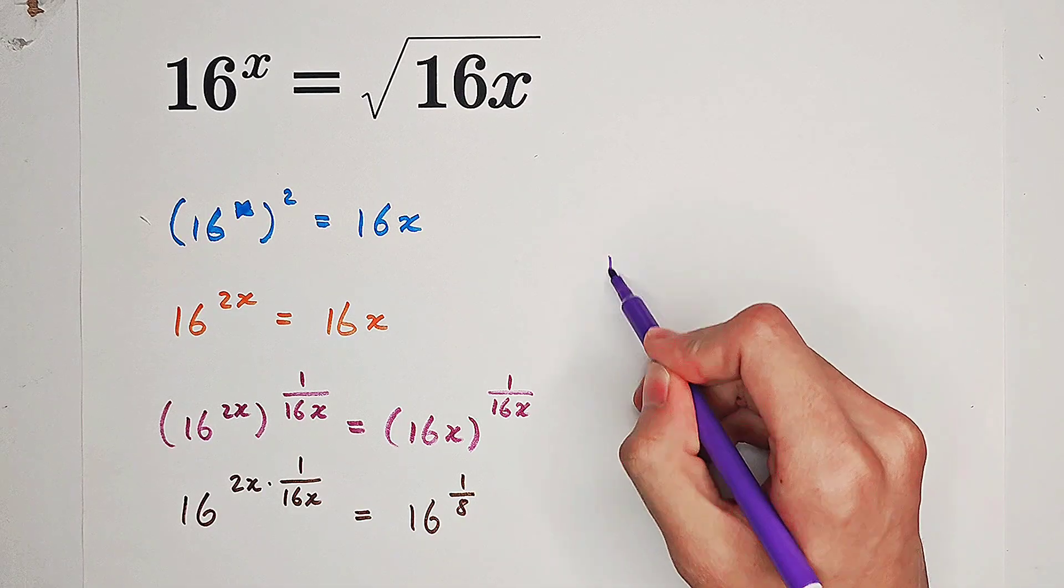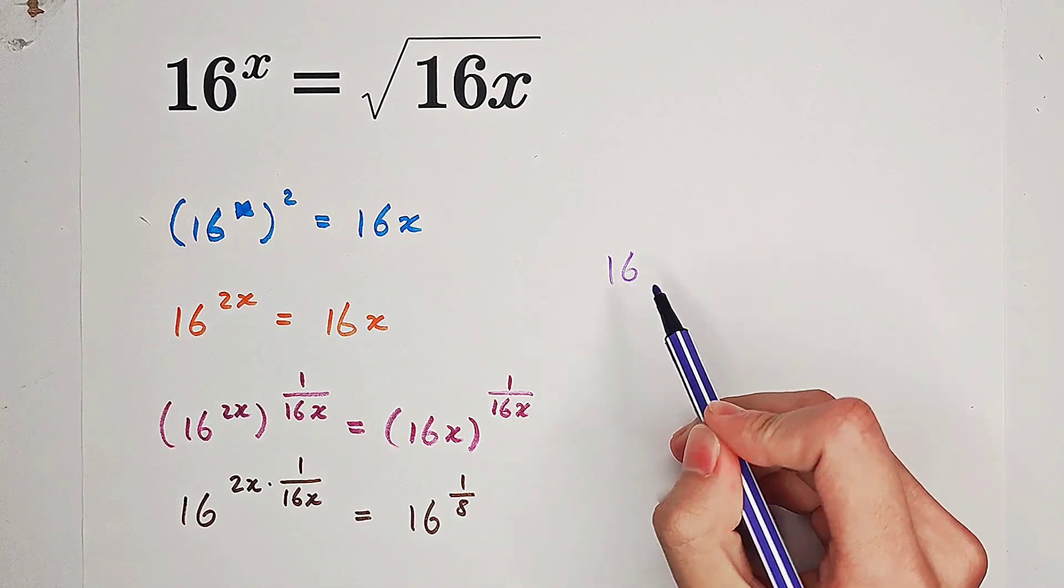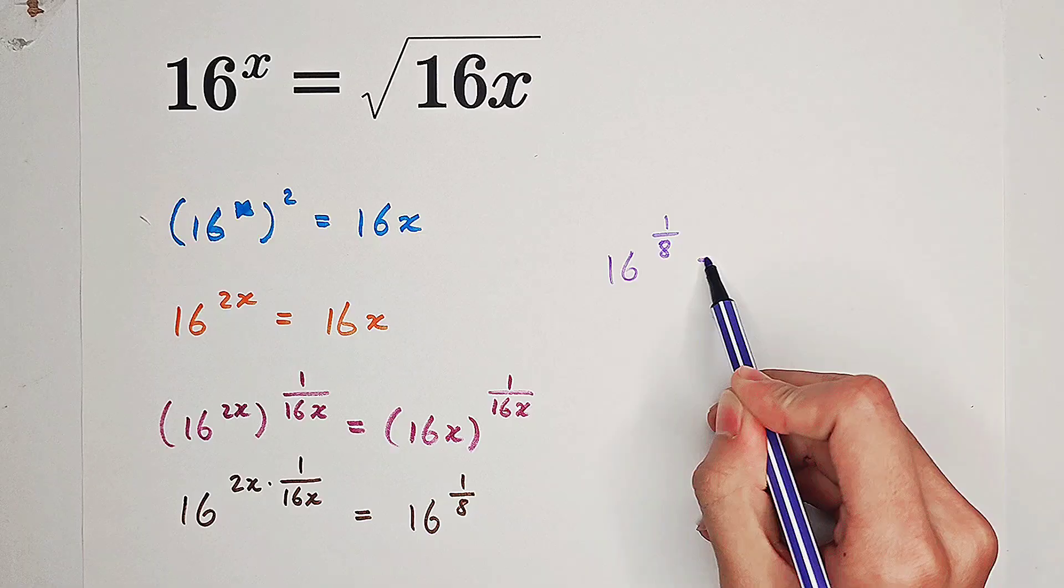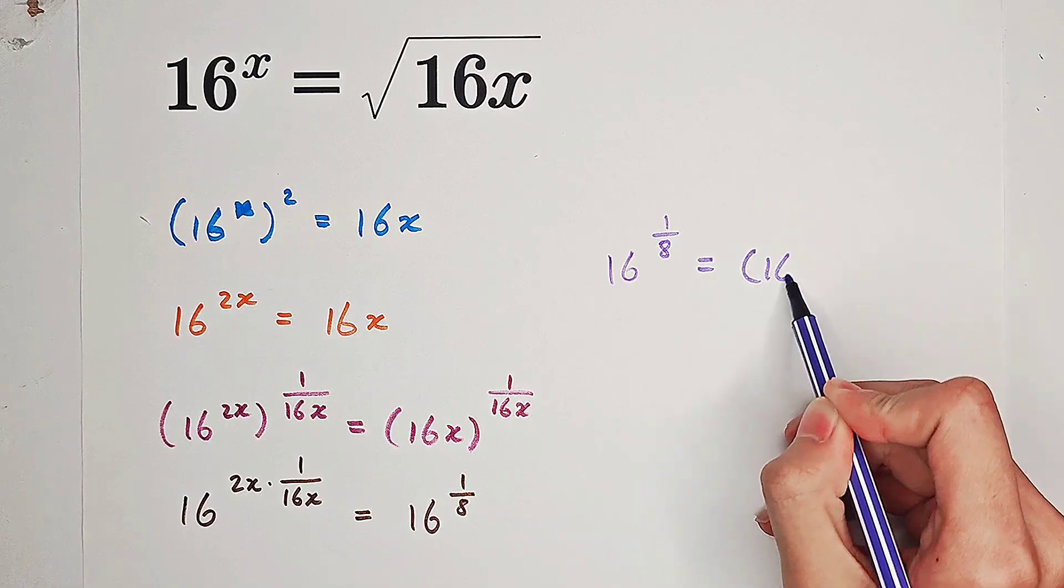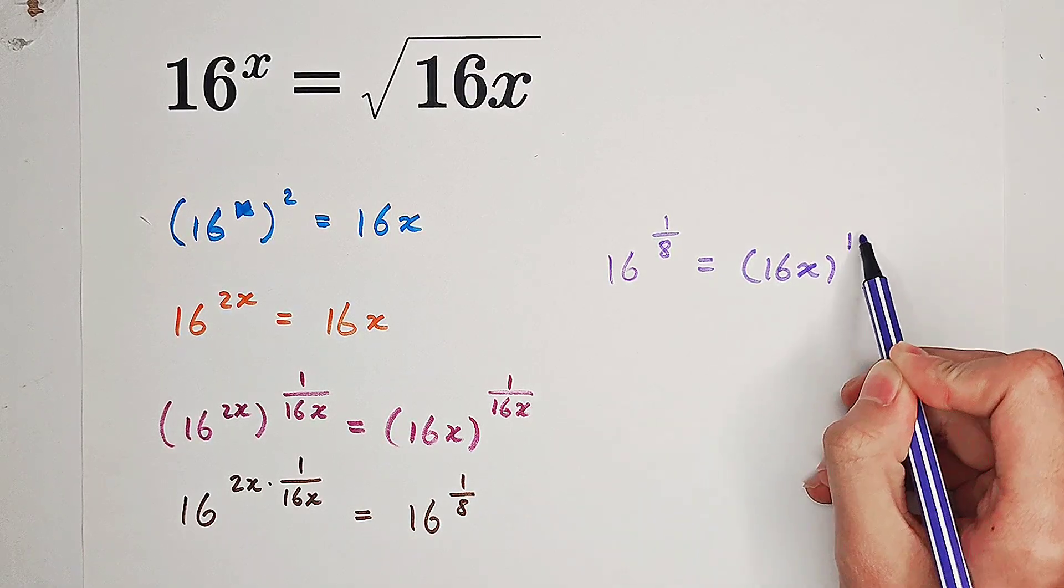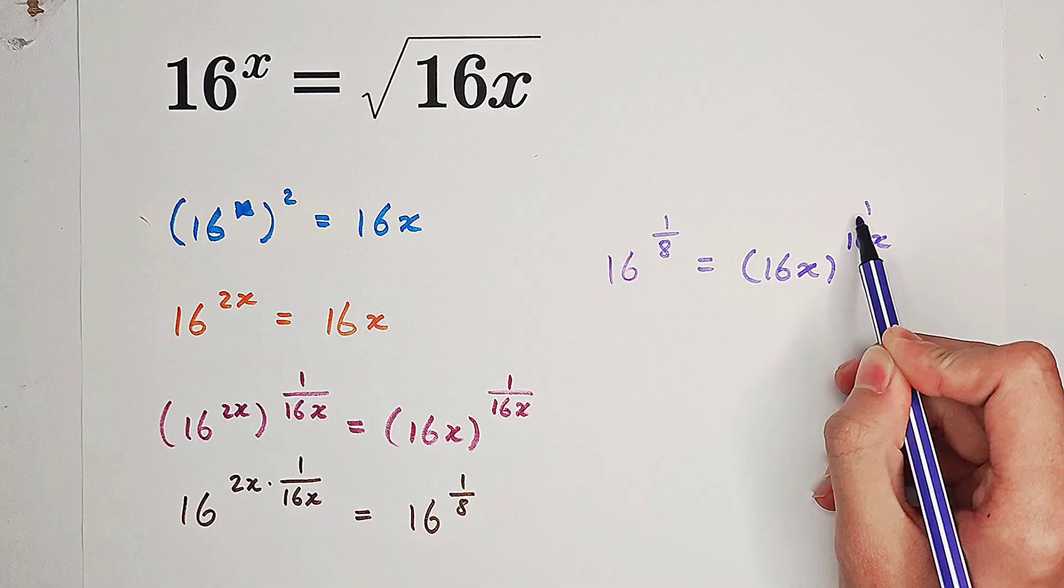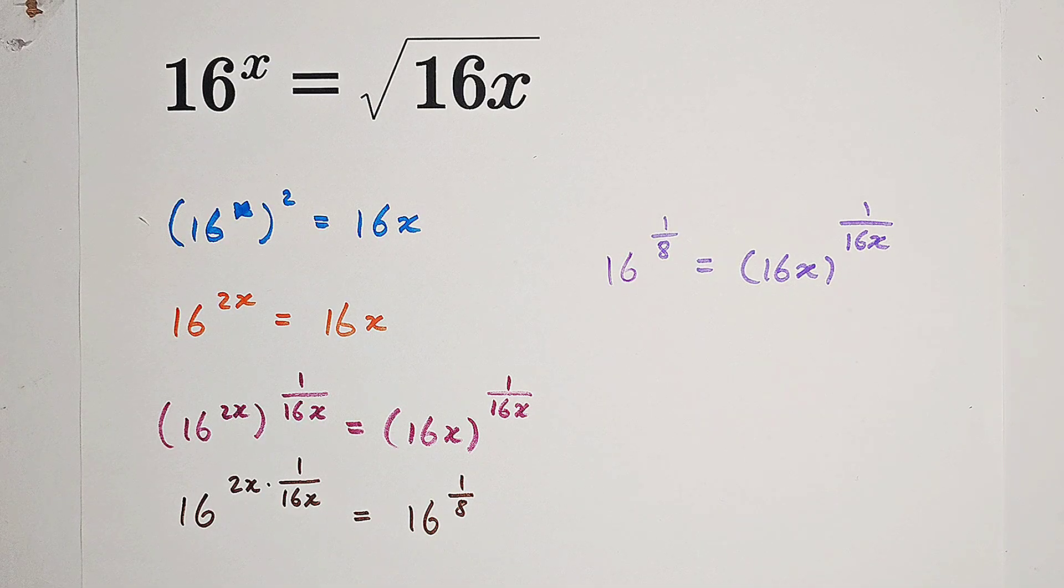So it means that we have 16 to the power of 1 over 8 equals 16x to the power of 1 over 16x. You can see that the left hand side...